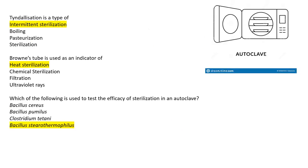Next: tyndallization is a type of what? Options are intermittent sterilization, boiling, pasteurization, or sterilization. Tyndallization is a type of intermittent sterilization. The correct option is intermittent sterilization.